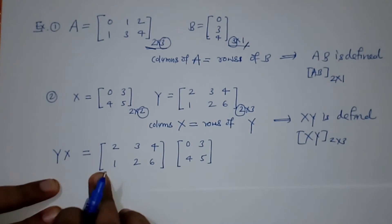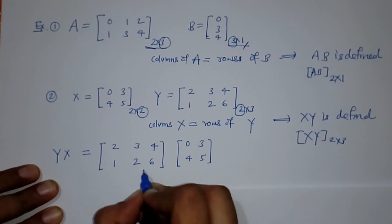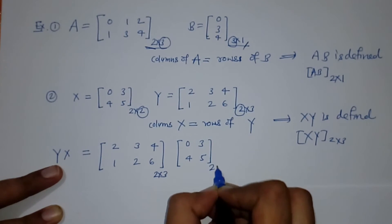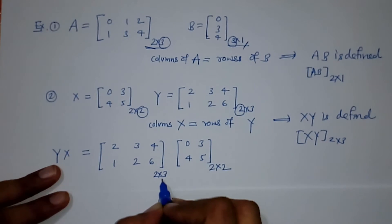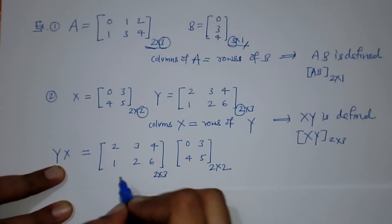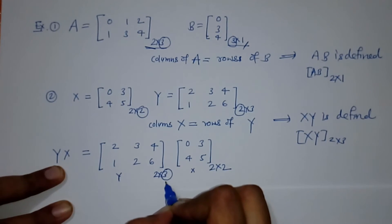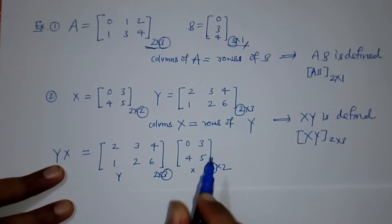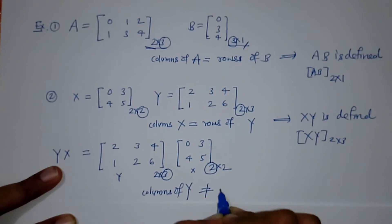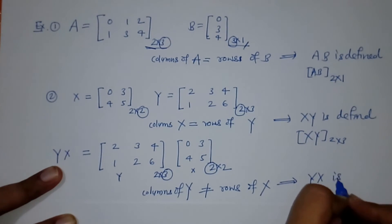Similarly, we check whether YX multiplication is possible or not. Y is of order 2 by 3 and X is of order 2 by 2. We check columns of Y and rows of X. Columns of Y equals 3, but rows of X equals 2 — columns of Y is not equal to rows of X. So YX is not defined.